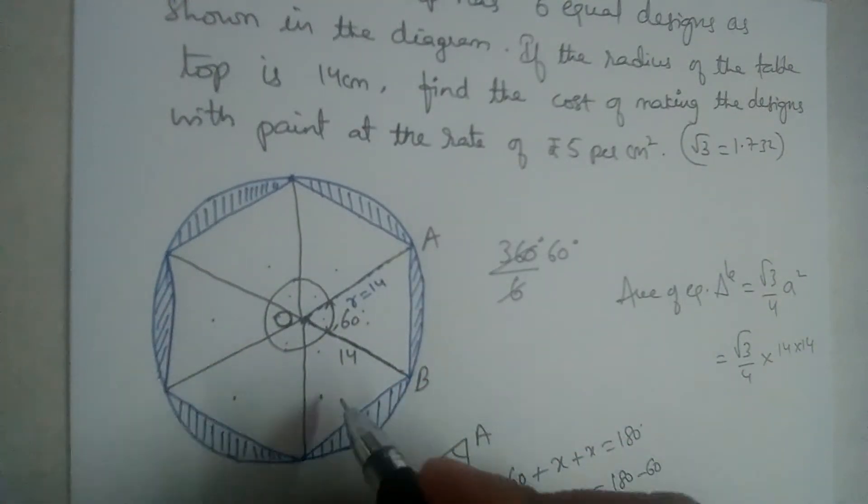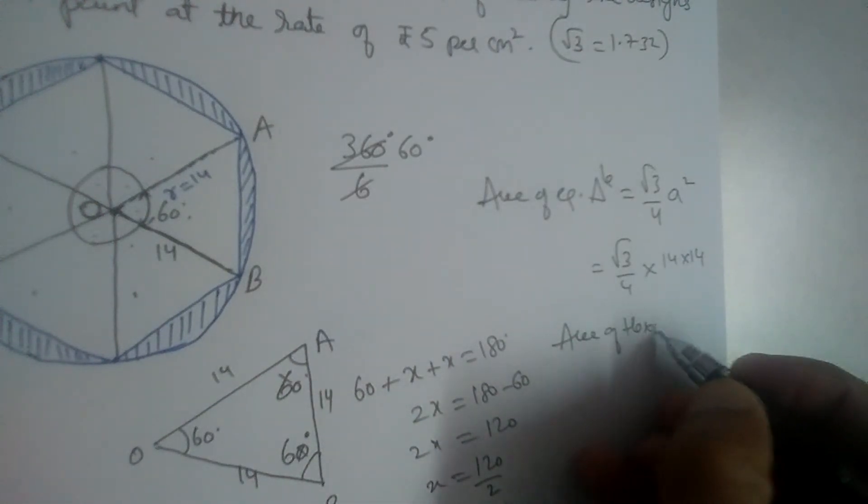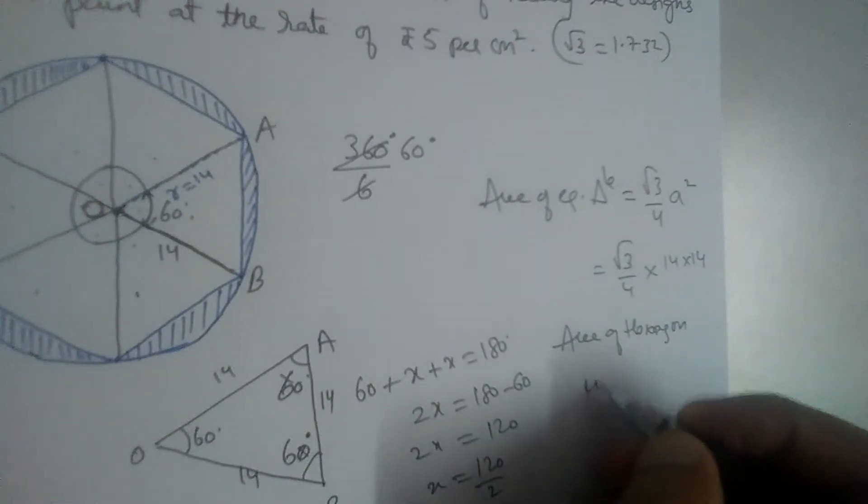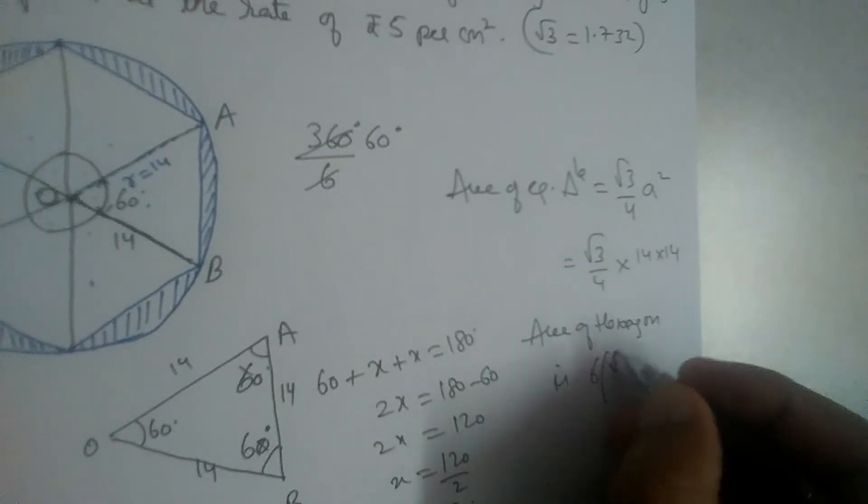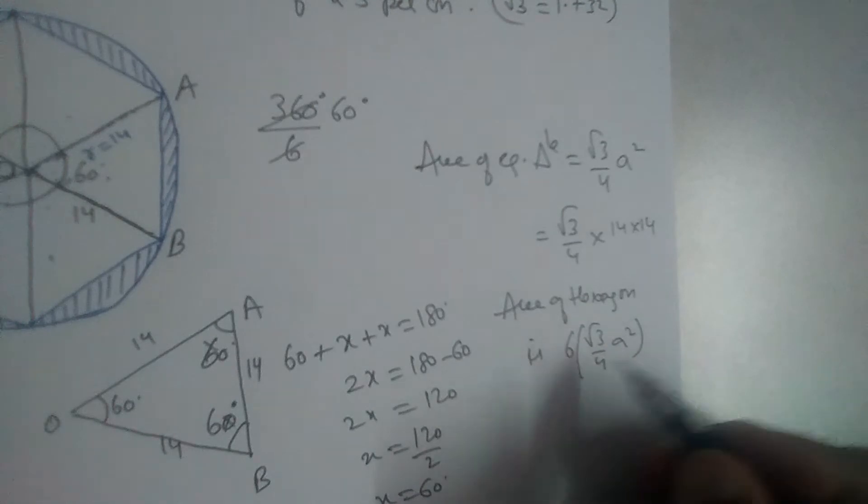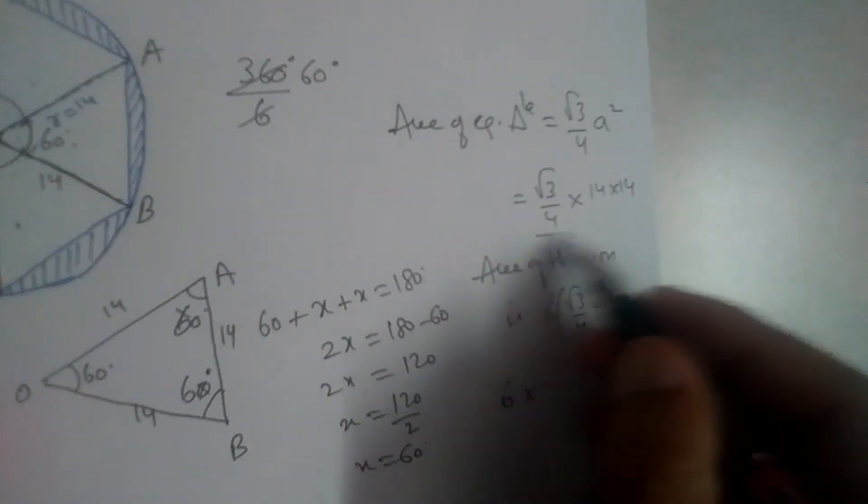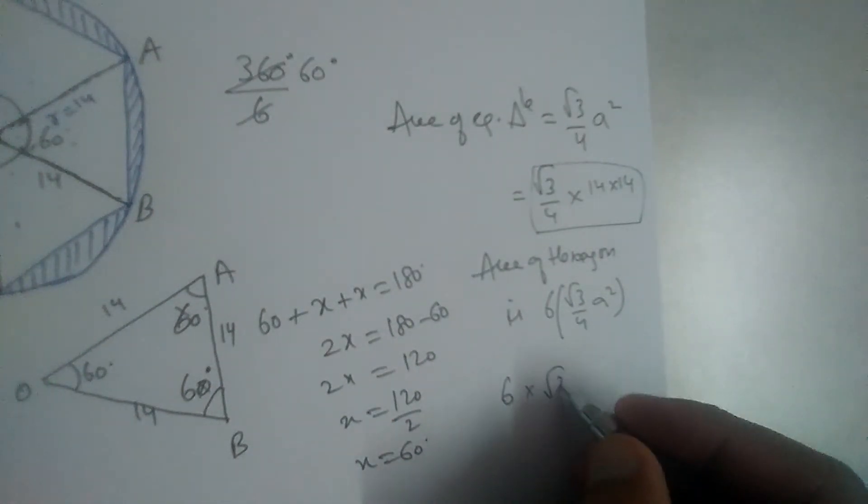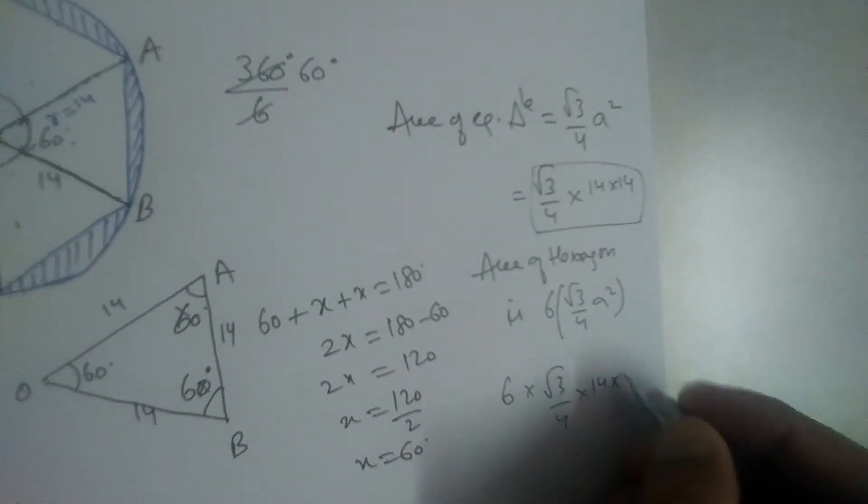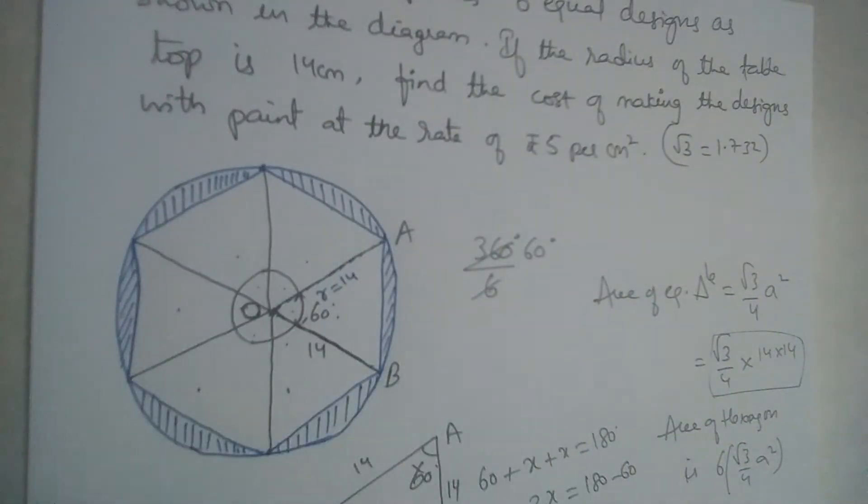This will be the area of equilateral triangle, but how many such equilateral triangles are there? One, two, three, four, five, six. So area of this hexagon, area of regular hexagon, is equal to 6 into root 3 by 4 a square. Six times area of one equilateral triangle.